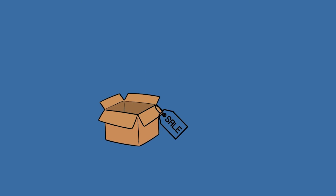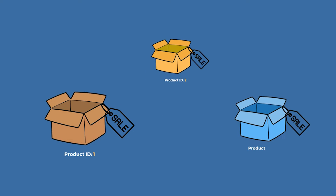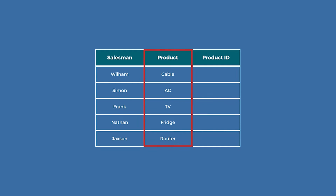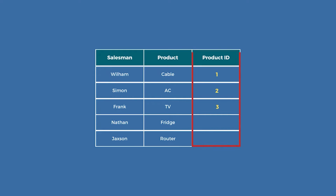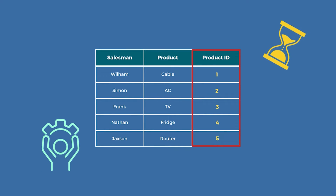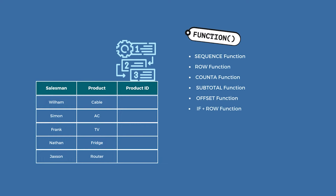If you are tracking sales, you should consider creating a unique product ID for each product. But if your sales report contains many products, creating unique IDs manually will take time and effort. In this case, Excel offers an easy way to generate numerical sequences by applying some simple formulas.